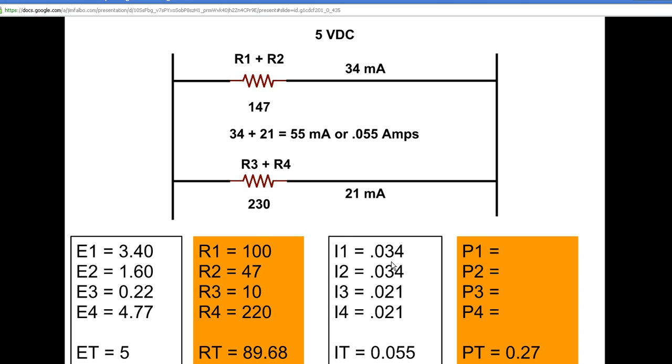So if this branch for R1 and R2 is 34 milliamps, then I can put in 0.034 for both I1 and I2. Current's the same in a series circuit. Same thing with I3 and R4. The current is the same in both of those loads, 21 milliamps, 0.021 amps. Now because I have known values in two columns, I can go ahead and solve for the unknown. I started with E because I want to know my voltage drops across each load.